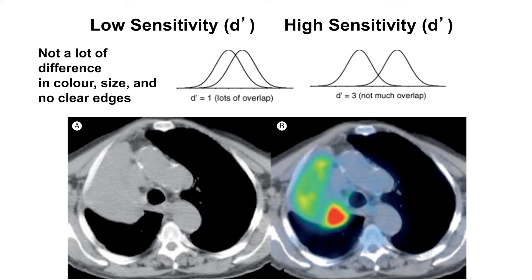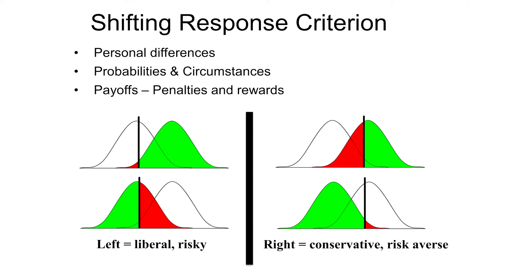Factors that affect response criterion include personal differences, the probability or likelihood of an event happening, or the payoff. Personal differences could include the level of risk aversion — if we shift our response criterion more to the left, we'll be more liberal and more risk-taking; if we shift it to the right, we'll be more conservative and more risk-averse. The probability distribution or likelihood of an event happening can also shift our response criterion — the more likely something is to happen, the more likely you would respond with a yes. The payoff will also have an effect: if there's a reward for answering yes and little penalty, you'll shift your response criterion left and get more hits. However, this will also lead to more false alarms. Alternately, if there's significant risk associated with misidentifying when a signal is present, you may shift to the right to ensure correct rejection.